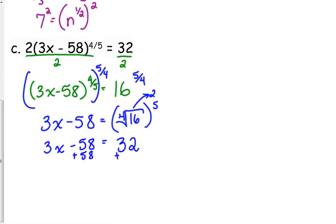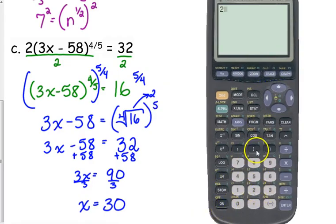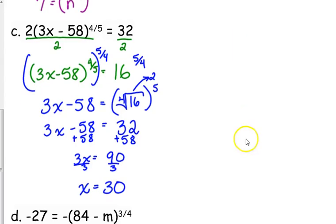And now we just have our linear equation. We add 58 to both sides. It gives us 90 divided by 3. So our solution here should be 30. And once again I will remind you, you can check this. Just go back to the original. You just have to be careful with parentheses. When you put that power, you've got to put that fractional power in parentheses. Because if you don't, it's going to raise it to the fourth and then divide the whole answer by 5, and that's not going to give you 32, even though 30 is the correct answer.